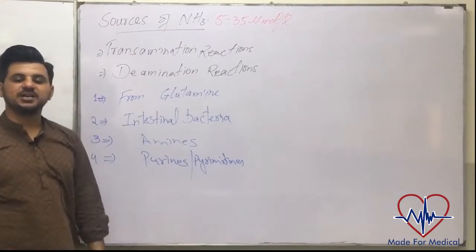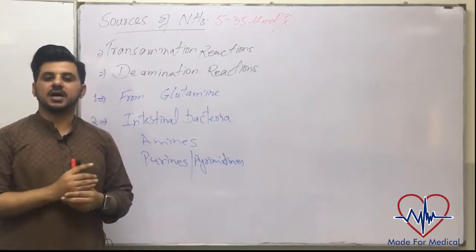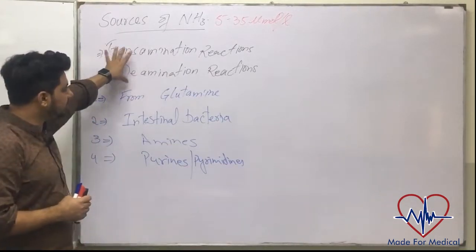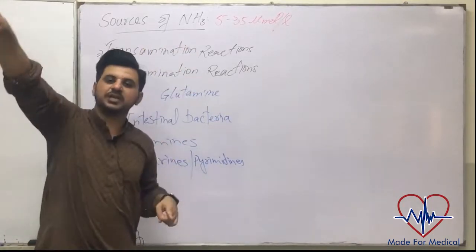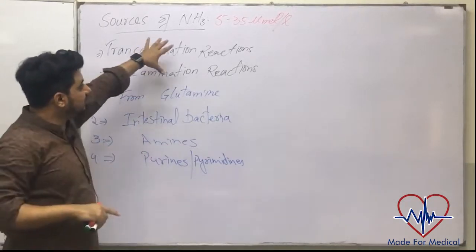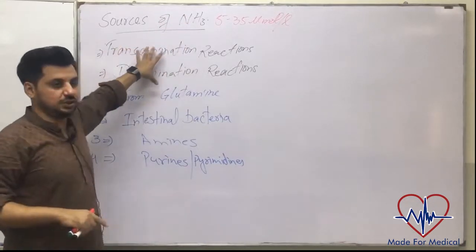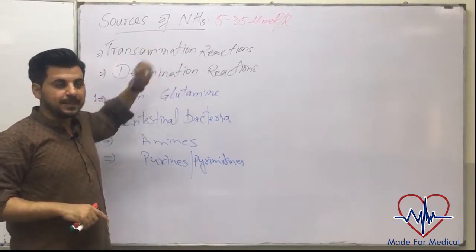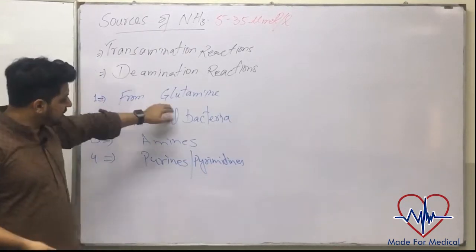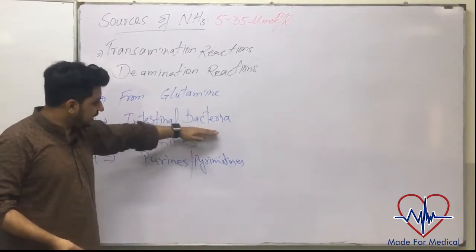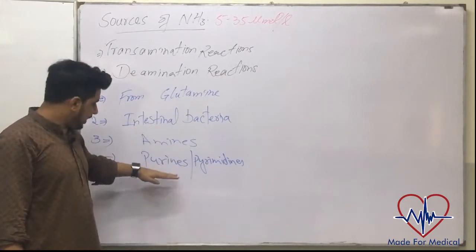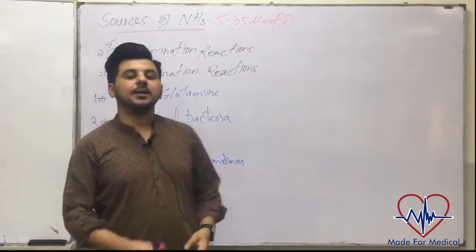To control ammonia levels, the body uses transamination and deamination reactions — commonly referred to as transamination reactions. With these two major reactions, ammonia is transported and its levels are controlled. Other sources of ammonia beyond amino acids include glutamine, intestinal bacteria, amines, and purines or pyrimidines.